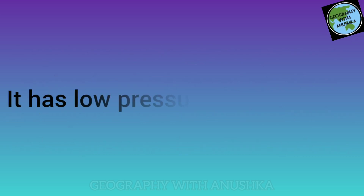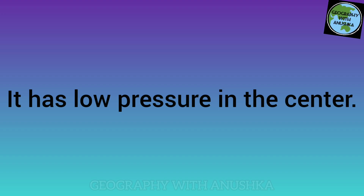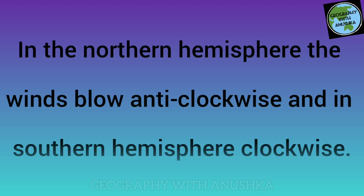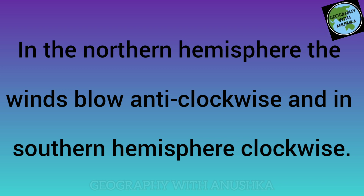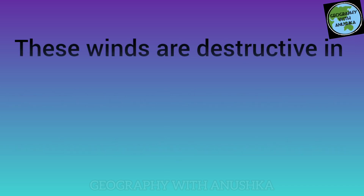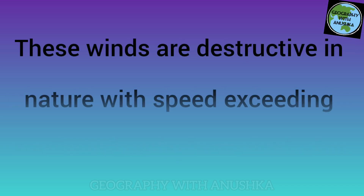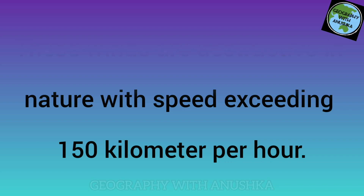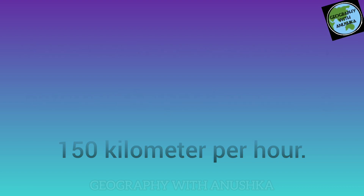The region of low pressure is called a cyclone. It has low pressure in the center. In the northern hemisphere, the winds blow anti-clockwise, and in the southern hemisphere, clockwise. These winds are destructive in nature, with speed exceeding 150 kilometers per hour.